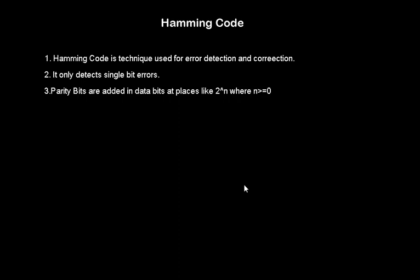Three points which are very important in Hamming code are written on the screen. Number one is Hamming code is a technique used for error detection and correction. Number two, it only detects single bit error.